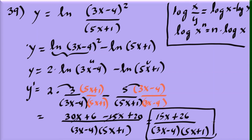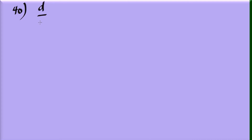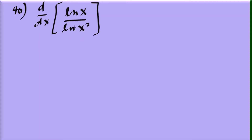Problem 40: differentiate natural log of x divided by natural log of x squared. Now this is a genuine quotient of two logarithm expressions, so we do need to use the quotient rule. Assign u equals natural log of x, and v equals natural log of x squared.